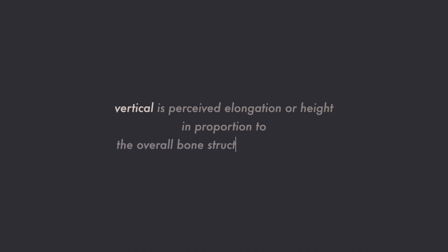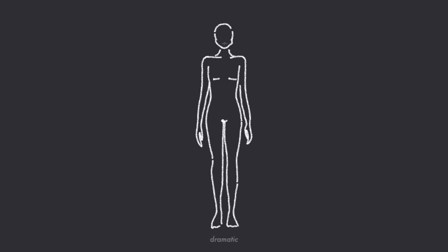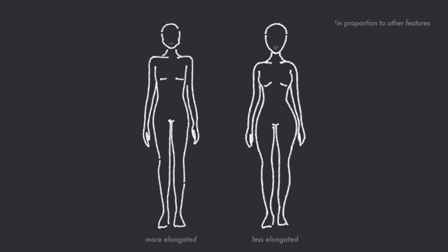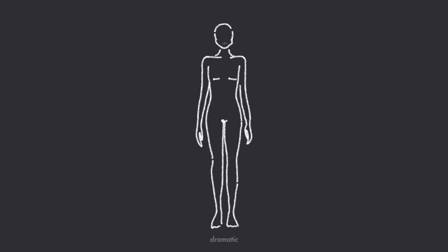Dramatic: vertical. If you have the dramatic body type, then your dominant feature is vertical. Vertical is perceived elongation or height in proportion to the overall bone structure and silhouette. Your perceived height is impacted by both the narrowness of your bone structure and the size of your head in comparison to your bone structure. Those with a narrower bone structure will appear taller or more elongated, and those with a proportionally smaller head will appear more elongated. Because of their vertical line and frame dominant figure, those with the pure dramatic body type have predominantly straight and sharp lines within their bone structure, silhouette, and individual features.